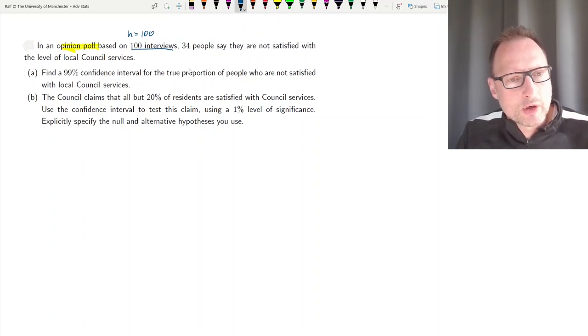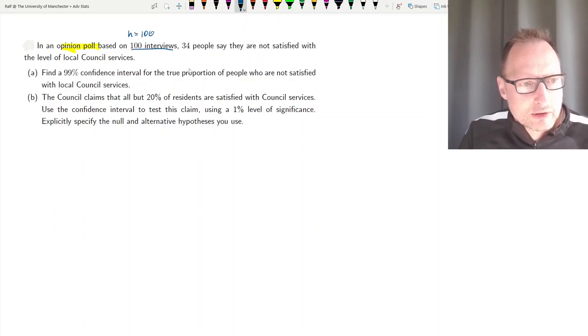We immediately know we are after a proportion. We can see that from part a: find the 99% confidence interval for the true proportion of people who are not satisfied with the local council services. In that sample, that proportion is 34 over 100, so 0.34. So 34% are not satisfied. And what we want to find out is the true proportion, the true proportion that's called pi of those people.